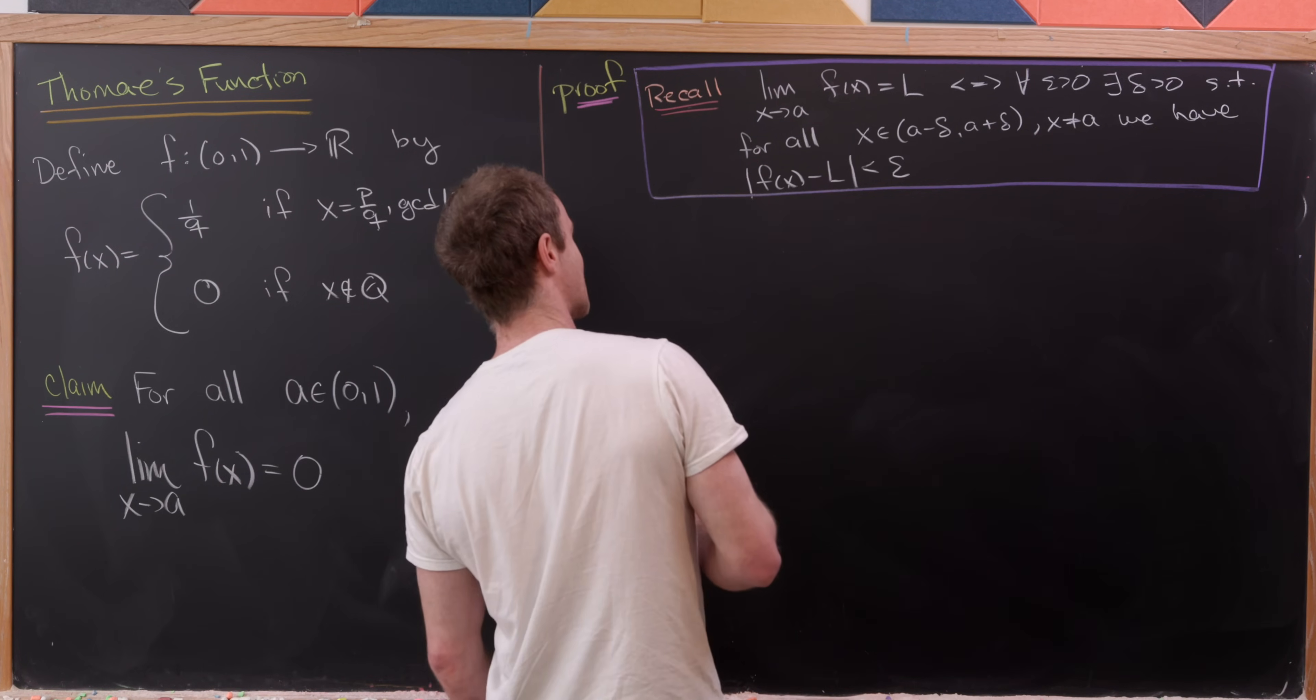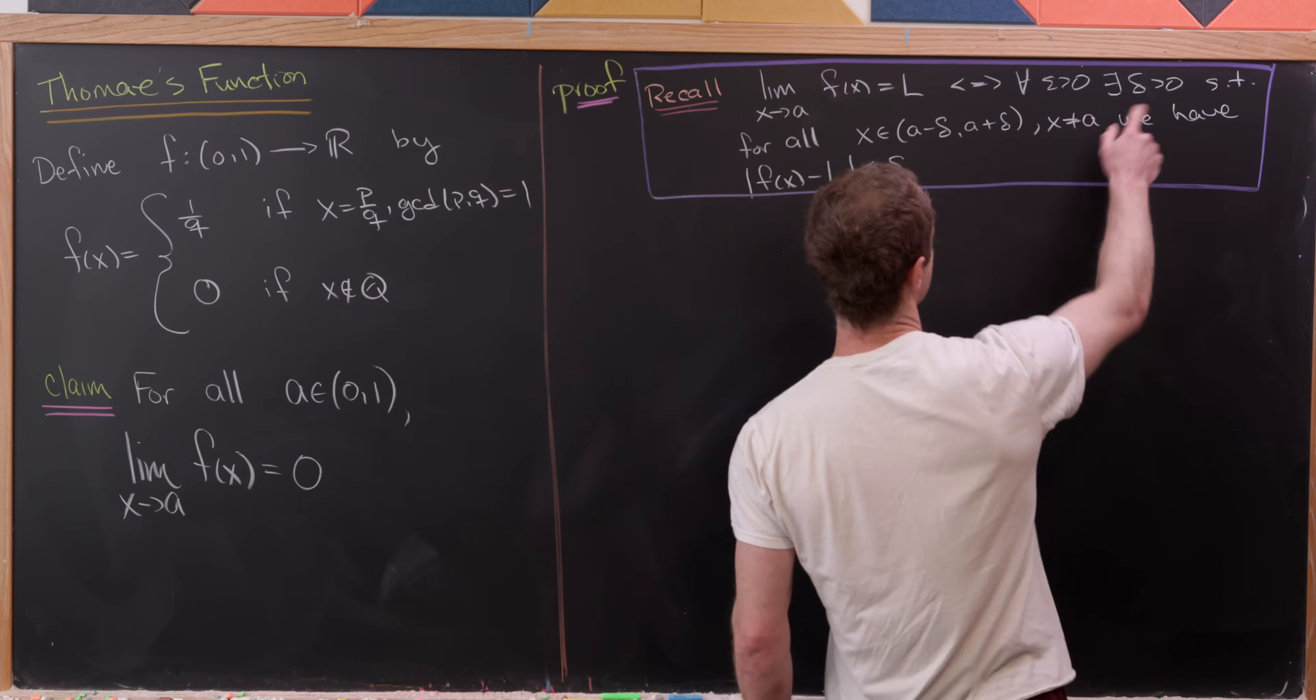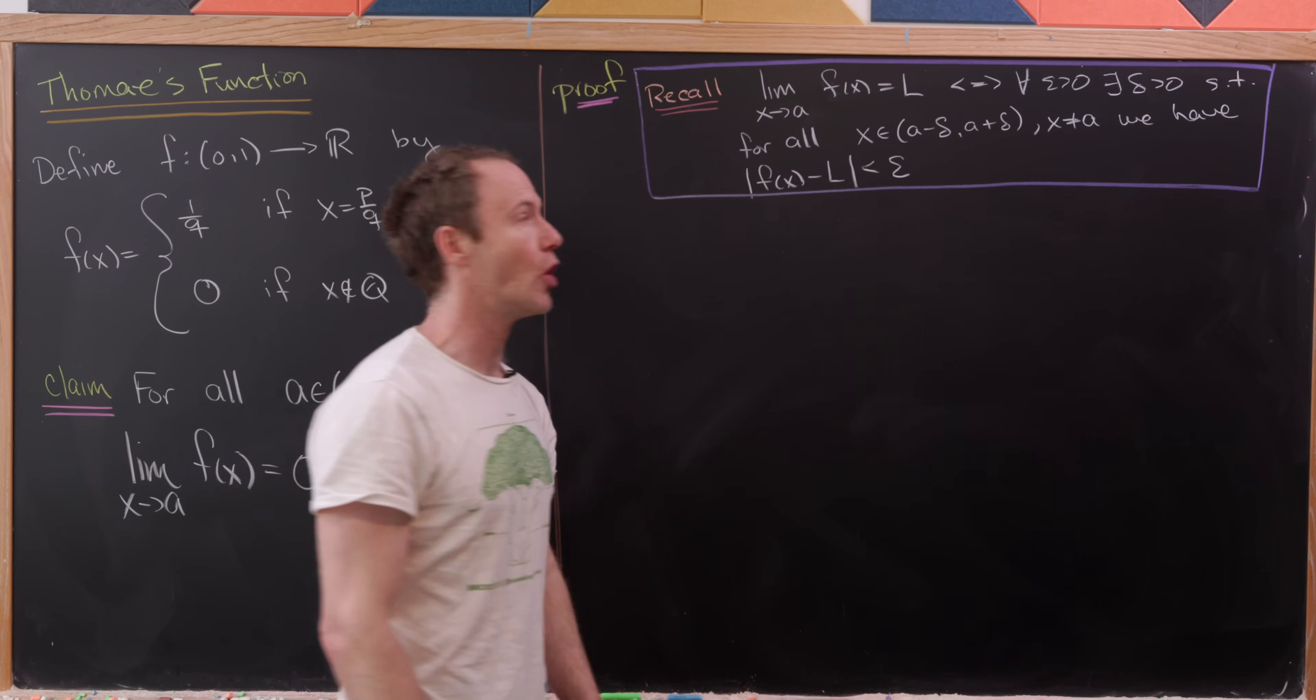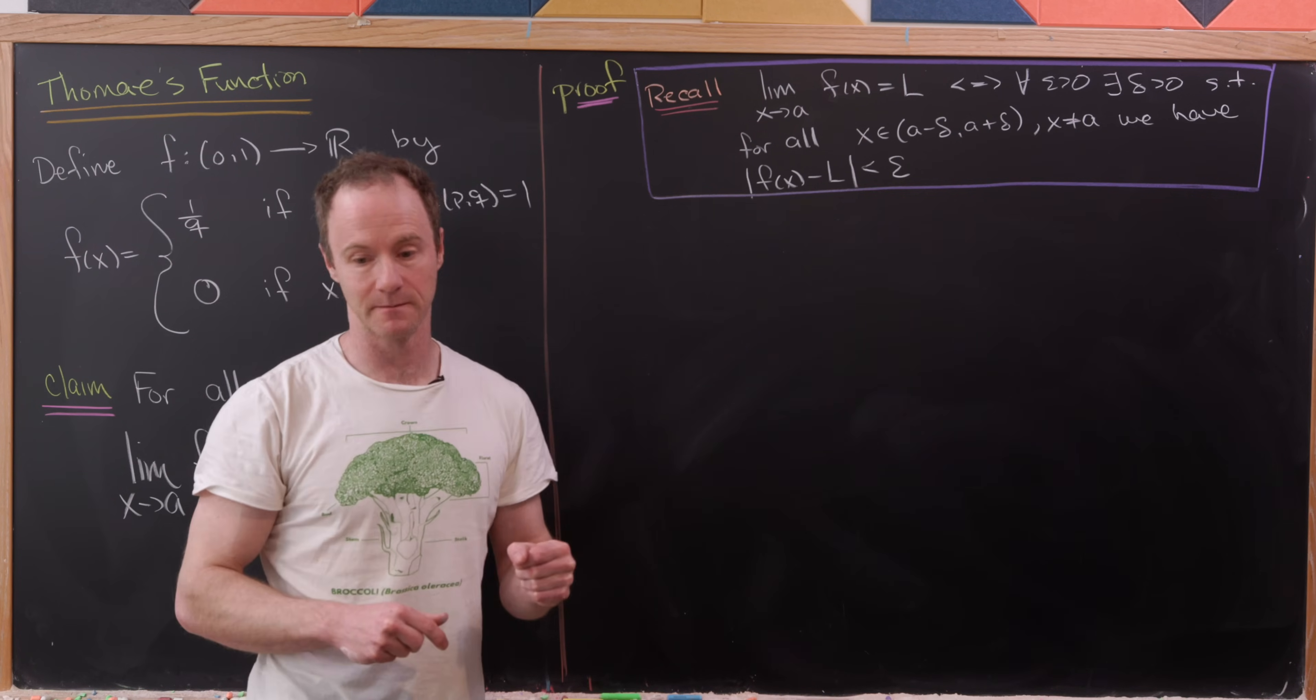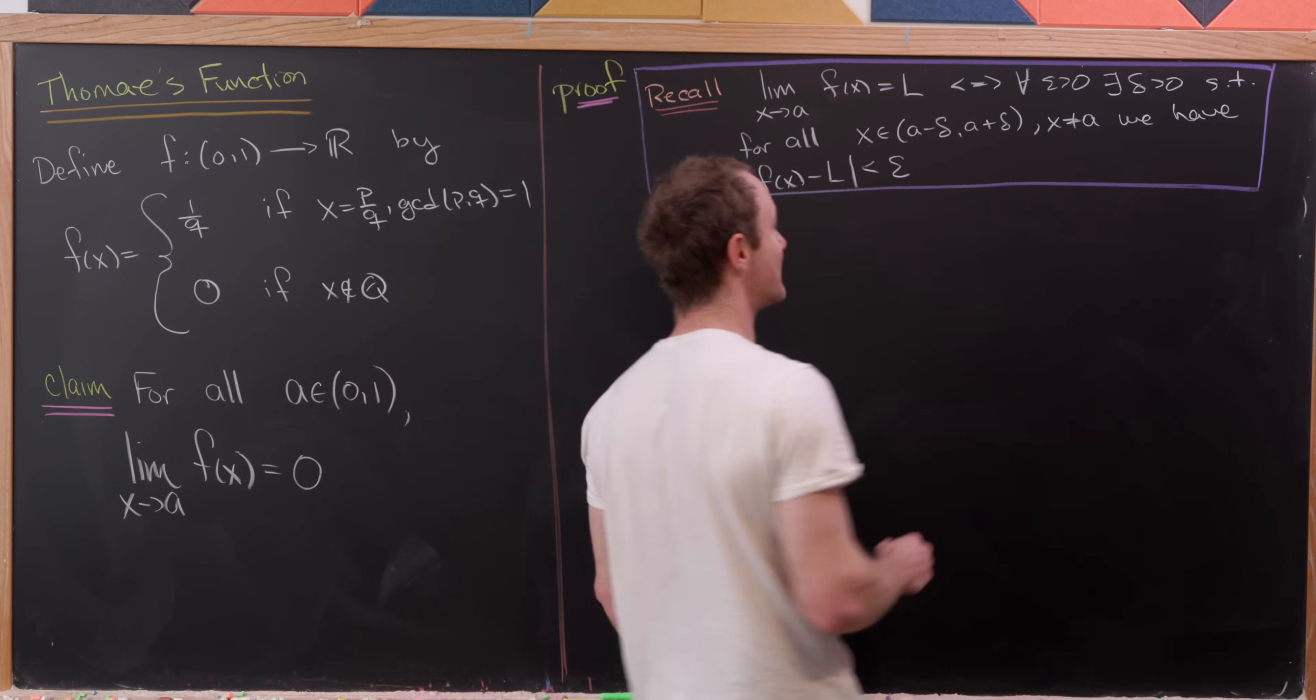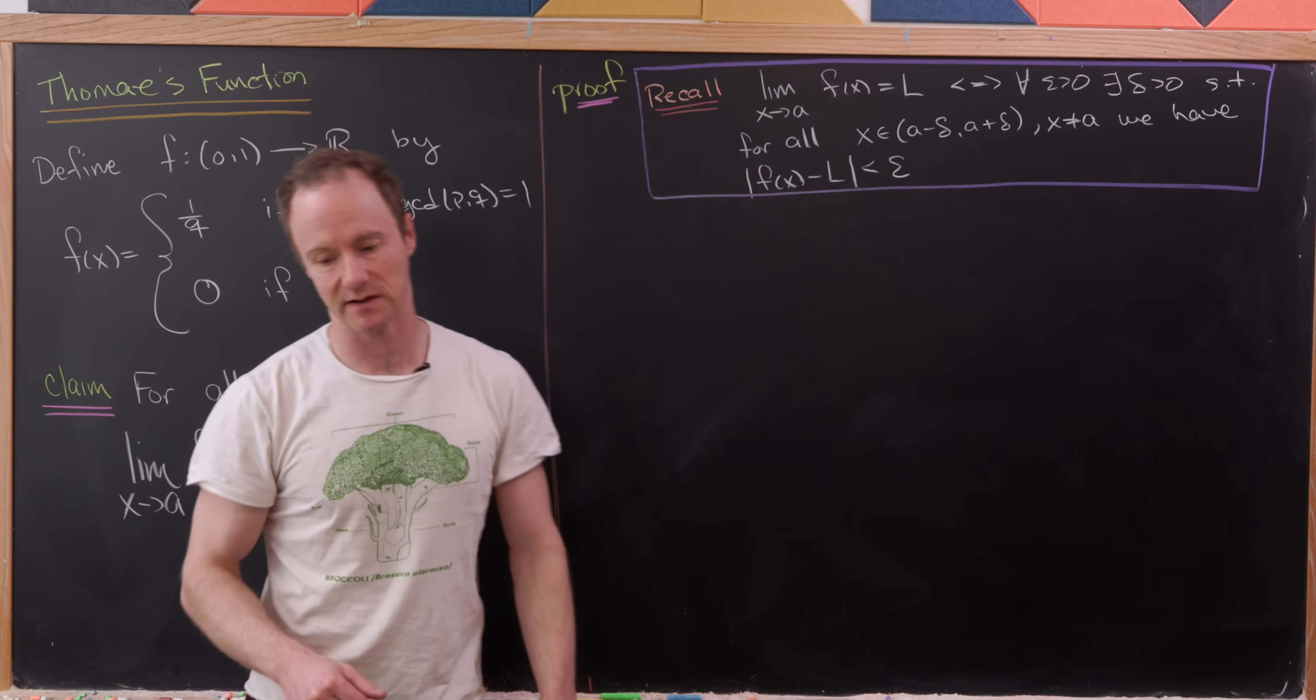So we say that the limit as x goes to a of f(x) equals L if for all epsilon bigger than zero, there exists a delta bigger than zero, such that for all x on the deleted open neighborhood, a minus delta to a plus delta. And what I mean by that is that for all x in the interval a minus delta to a plus delta, except when x is equal to a, we have the absolute value of f(x) minus L less than epsilon.